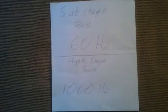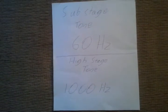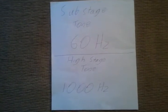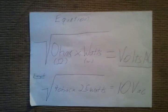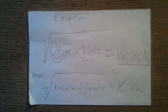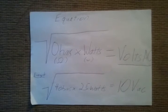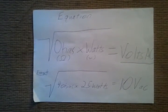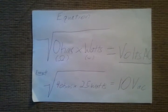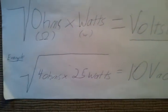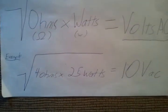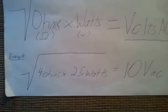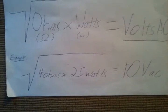Back to the test tones. For the sub-stage I recommend using a 60Hz tone. For the highs stage I recommend using a 1000Hz tone. Now for a little physics: the equation needed is the square root of the impedance in ohms times the power in watts, which equals the volts AC. You want to use AC volts, not DC volts. For example, if you wanted to go for 25 watts RMS, you take the square root of 4 ohms times 25 watts RMS and you would get 10 volts AC.